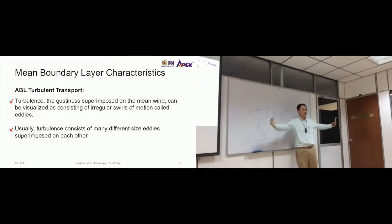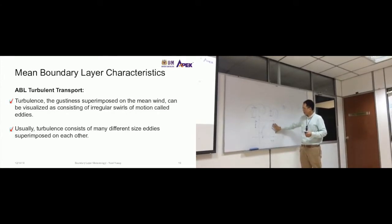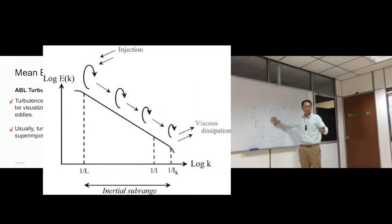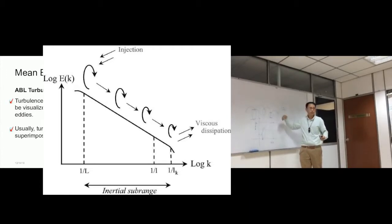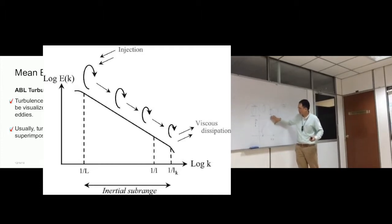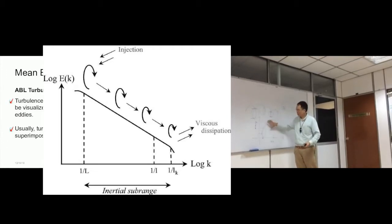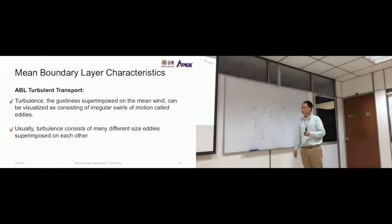Different size eddies come from different sources of wind. In the large-scale range, energy comes from large-scale winds — the general circulation patterns like the northeast and southwest monsoon winds. As it progresses, that energy dissipates either in the low-frequency or high-frequency range. The key idea is that you have all these different size eddies within the turbulence inside the wind.